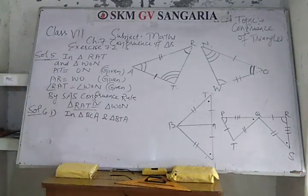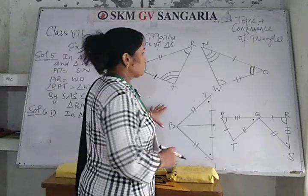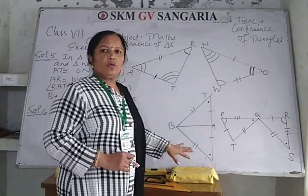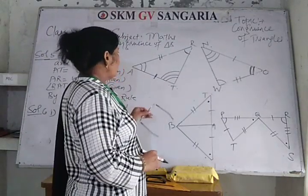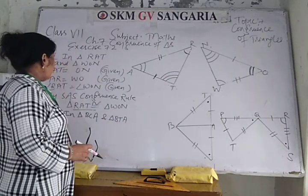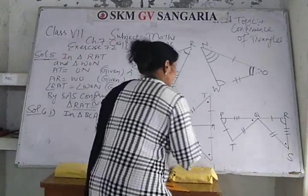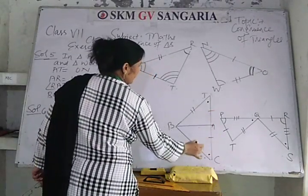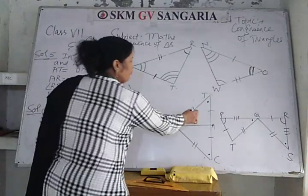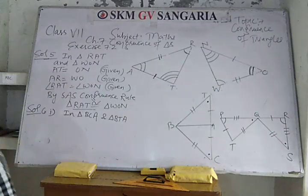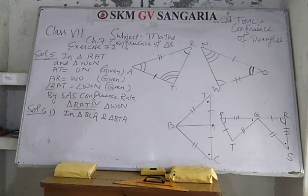Similarly, next question — question number six. Look at the figures very carefully and draw both figures in your notebook with scale and pencil. In triangle BCA and triangle BTA, there are two triangles in this figure: triangle BCA and triangle BTA. What are the congruent parts here?